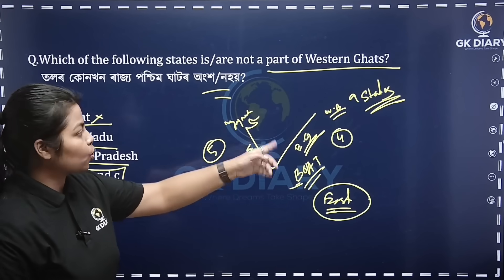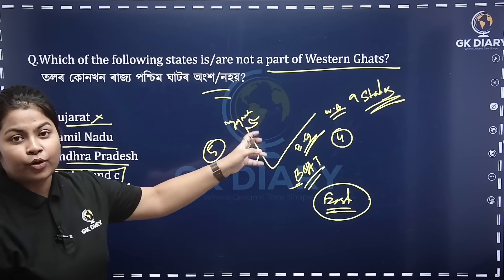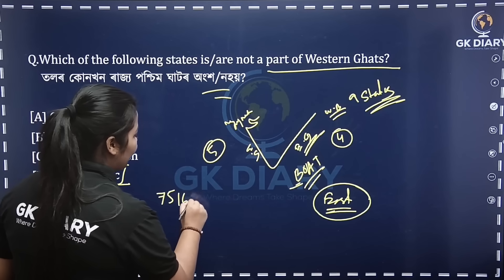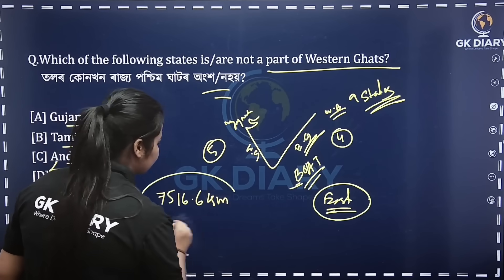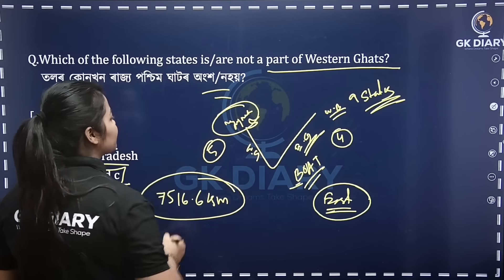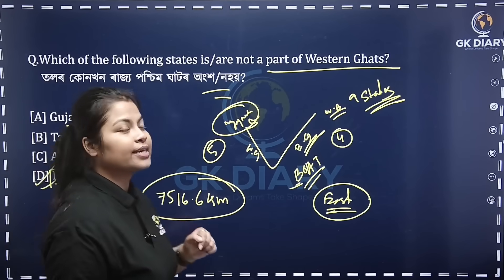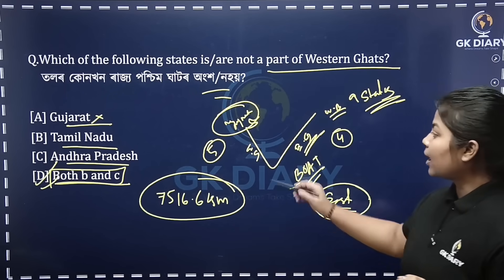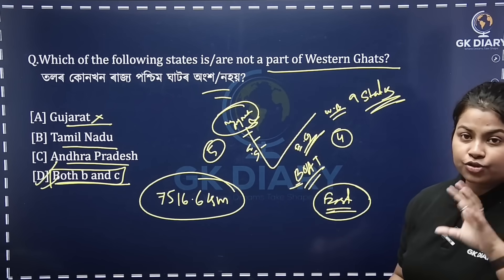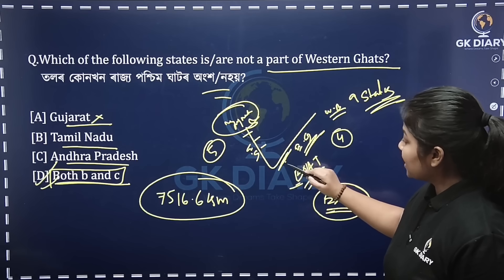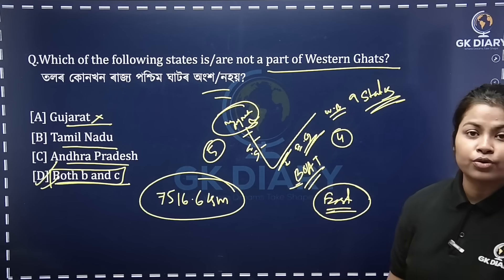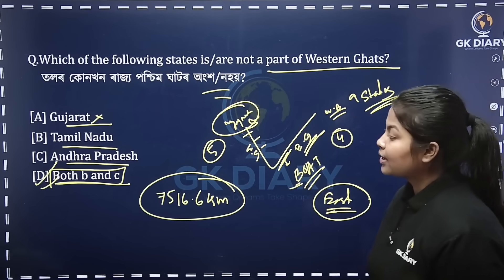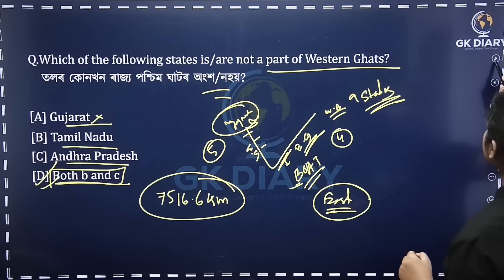The total length is 7516.6 km. If you want to share the highest price, then Gujarat will be the same. So if you want to go to Tamil Nadu, the correct option here is D.